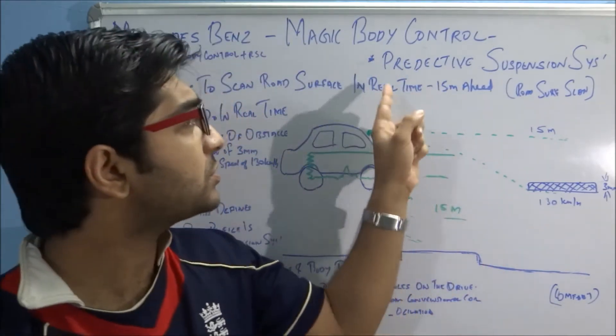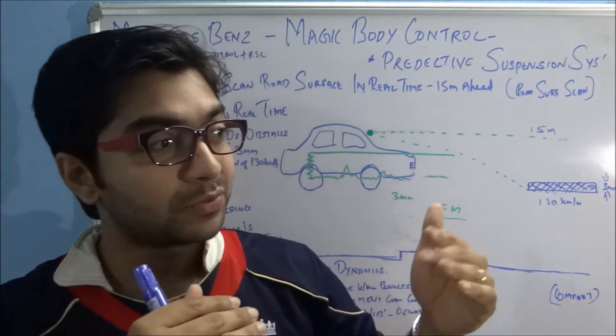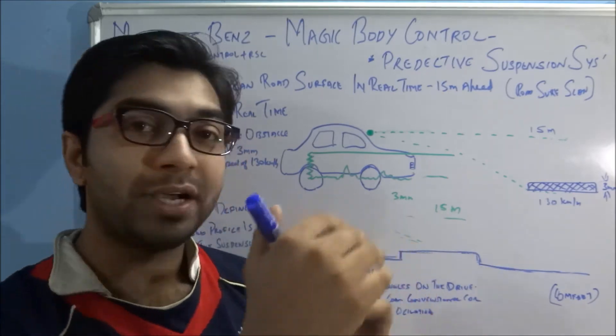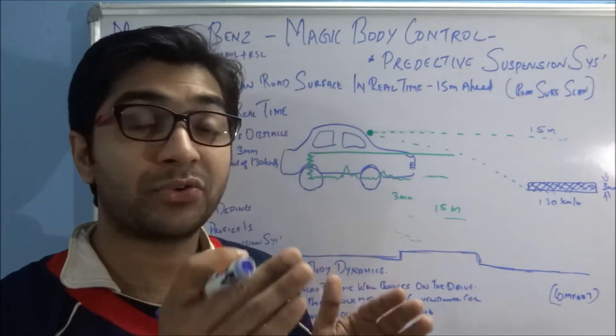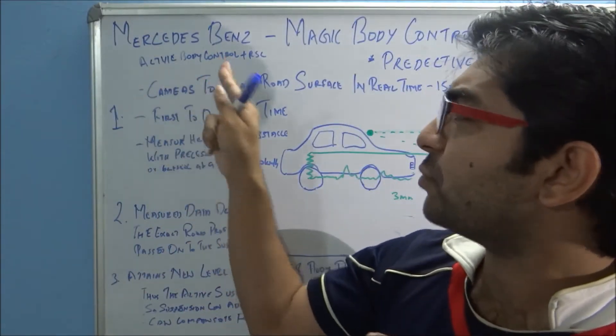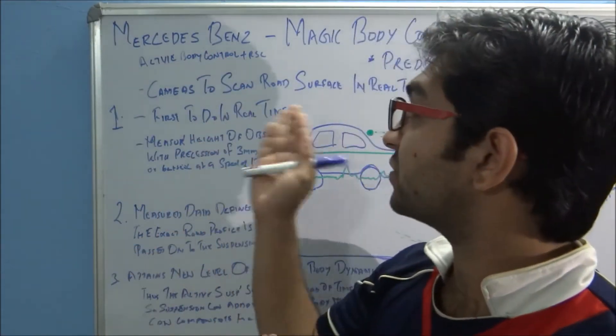It is also called a predictive suspension system because it understands or predicts where the suspension has to adjust to a hump or a dip to stabilize or reduce the vibration. It's a combination of the active body control system, which we already know, plus the real-time road surface scan system. Both of these technologies combine to give the magic body control to the vehicle.